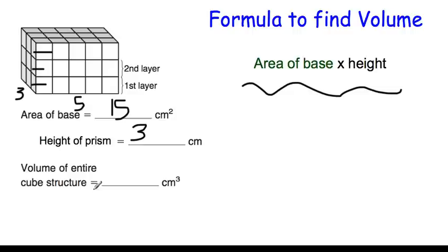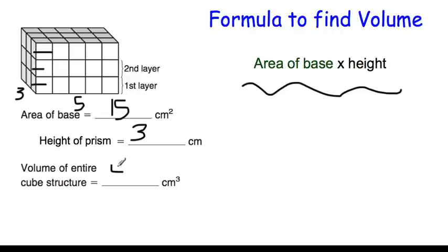Then all we do is multiply 15 by 3. So 15 times 3 is 45, and because we are working with volume — it's three-dimensional — it's going to be 45 centimeters cubed. So area of the base times the height — make sure you write that down in your notebook as one of the formulas to find volume.